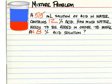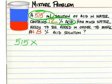Step 1 is to find out how many milliliters of acid do we have if we have 515 milliliters total of acid and water and 12% of that is acid. So 515 times 0.12. 515 times 0.12 is 61.8. 61.8 milliliters of acid.